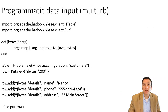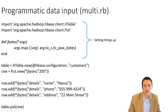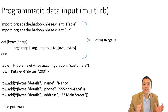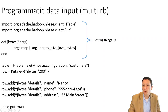Here is a sample JRuby program we can use to write data into HBase. JRuby is just a Java-based implementation of Ruby, and this code looks a lot like what you would typically see in either a Java or Ruby application. We're importing two packages from org.apache.hadoop.hbase.client — the first allows us to interact with HBase tables, and the second allows us to do a put command into HBase.